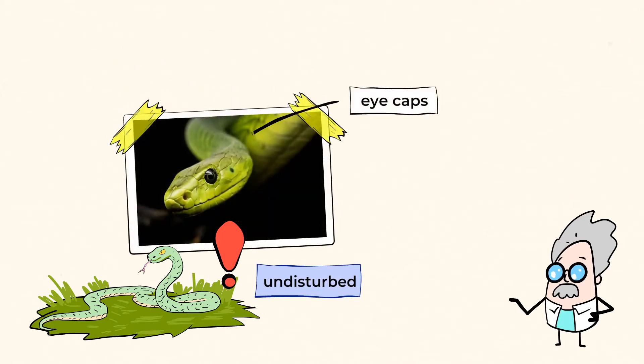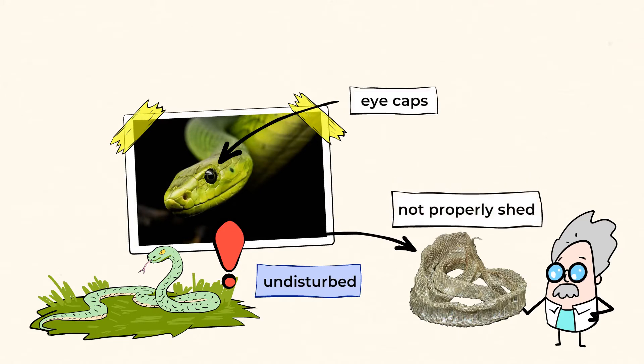Snakes have eye caps instead of eyelids. So if those thin layers of skin don't shed properly, the snake could be blind for the rest of their life. And the remaining skin could also have parasites or gross little bugs. In other words, the snake would probably get a disease or become sick.